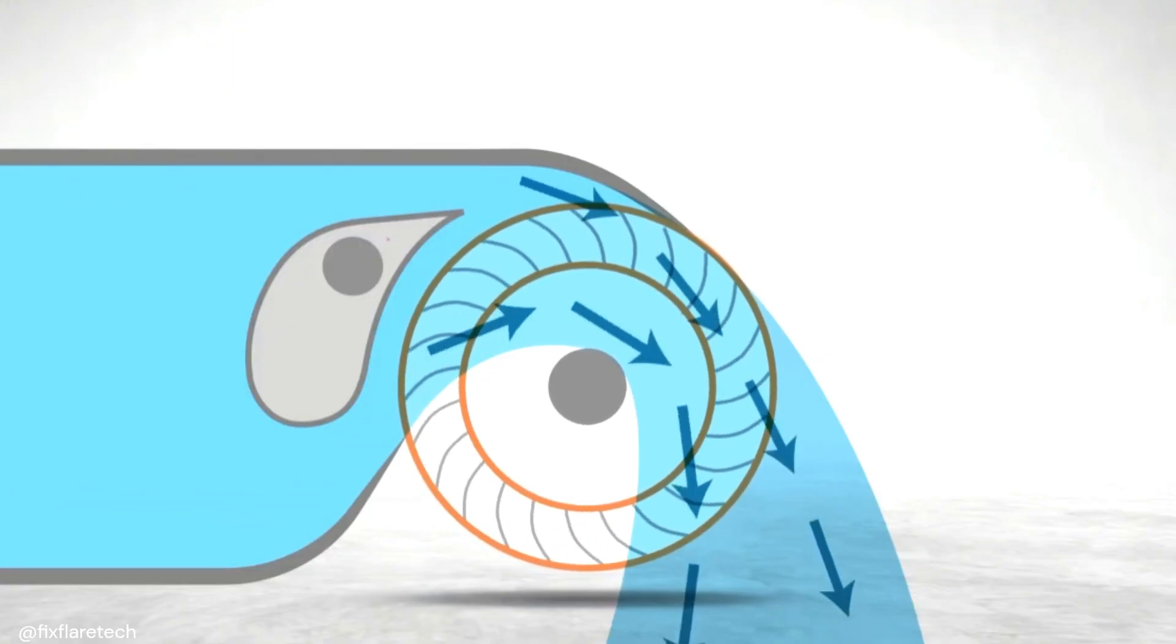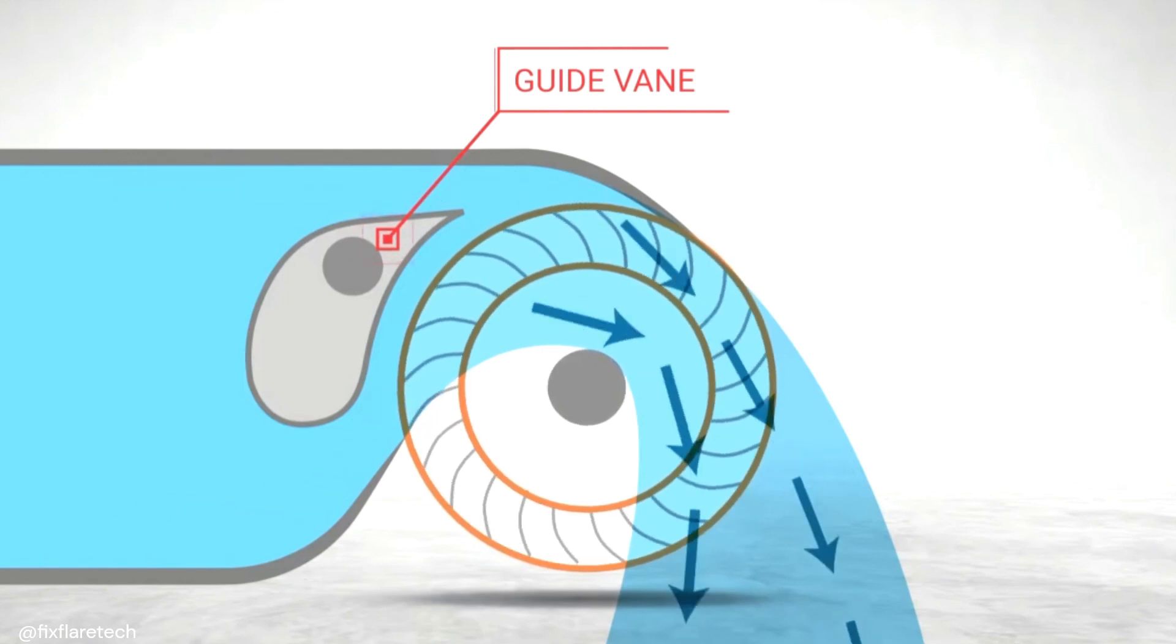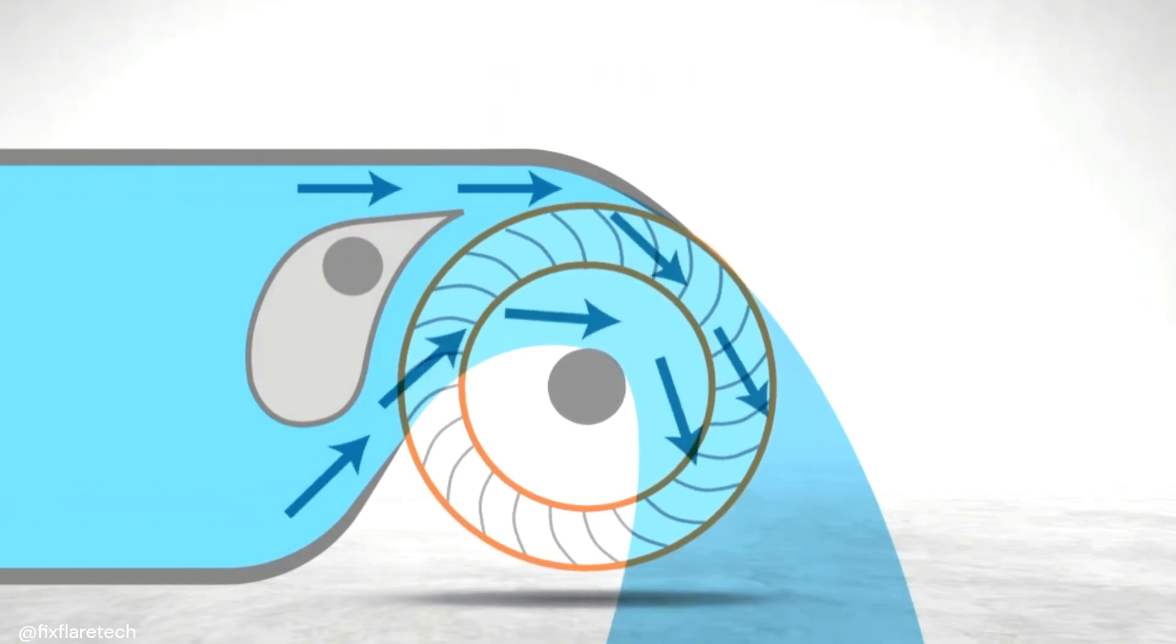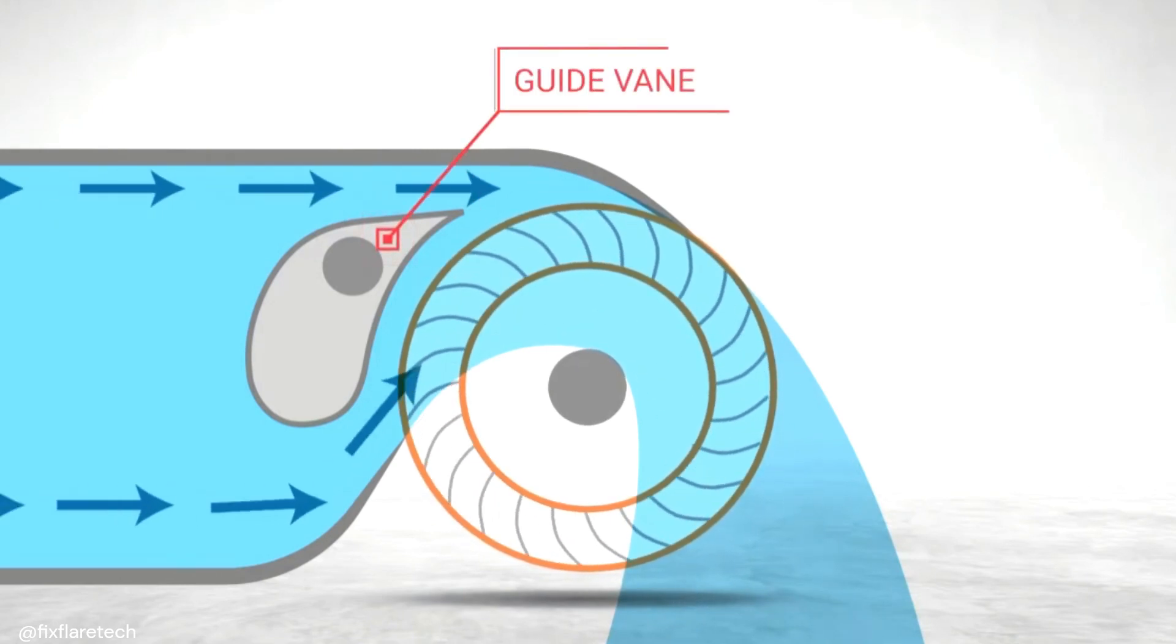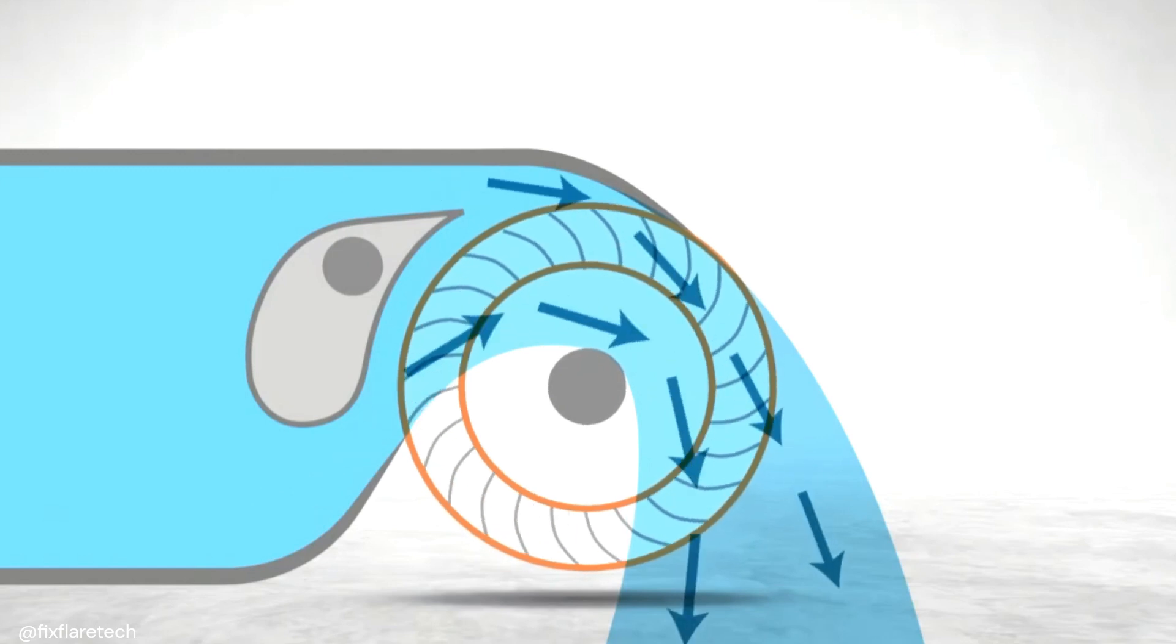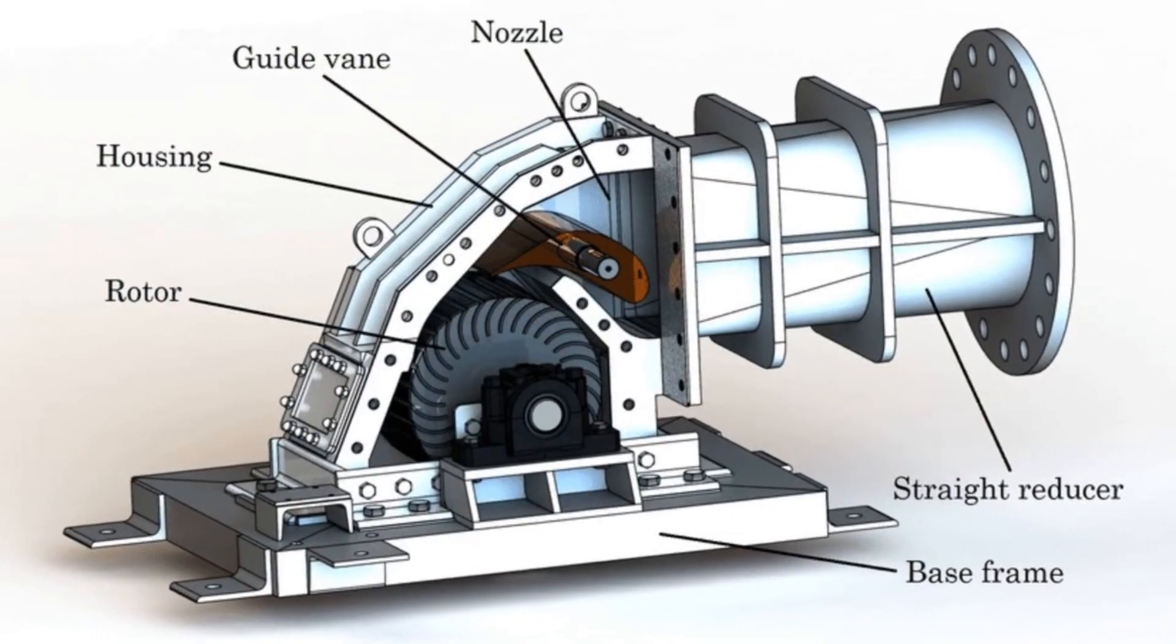Guide vanes or deflectors, adjustable components located upstream of the runner, control the water flow entering the turbine. By tweaking the angle of these guide vanes, one can optimize the turbine's performance under varying operating conditions.